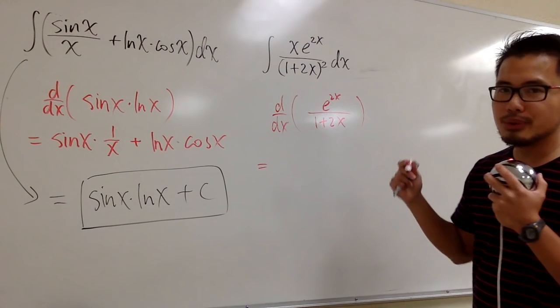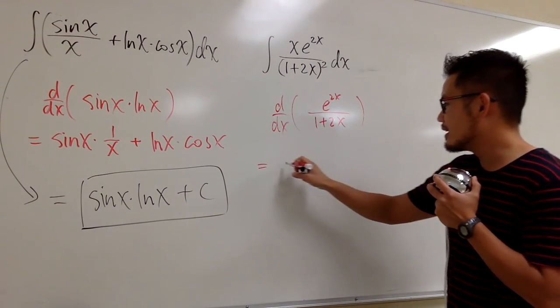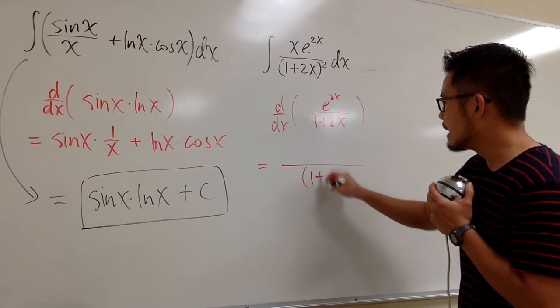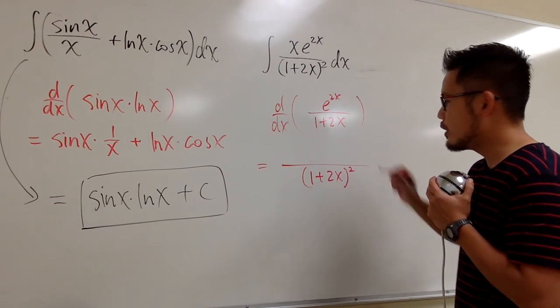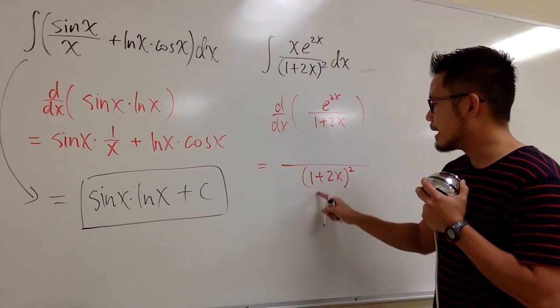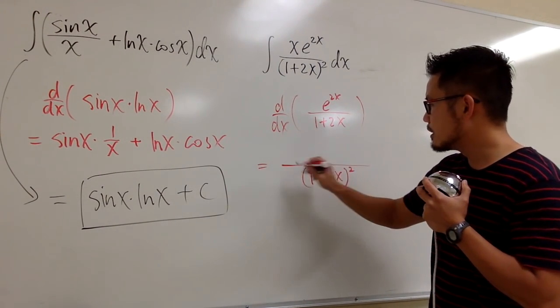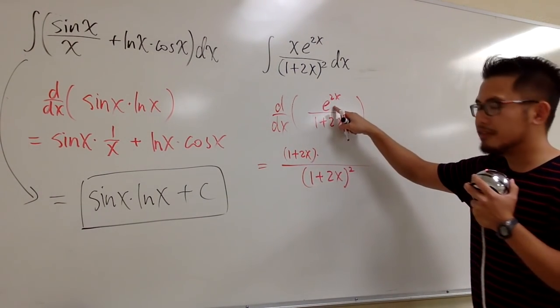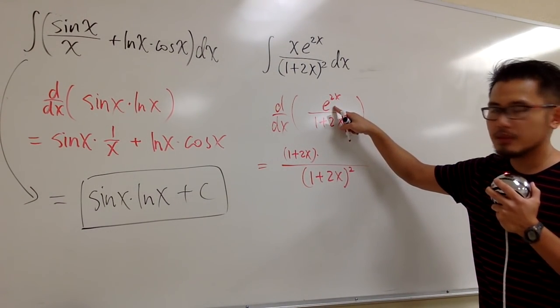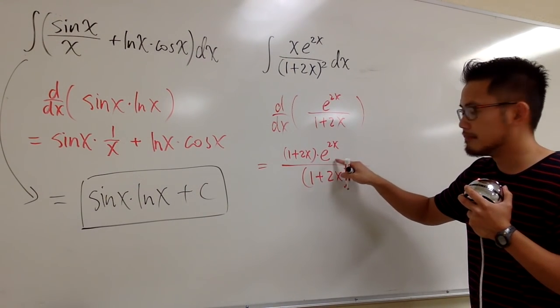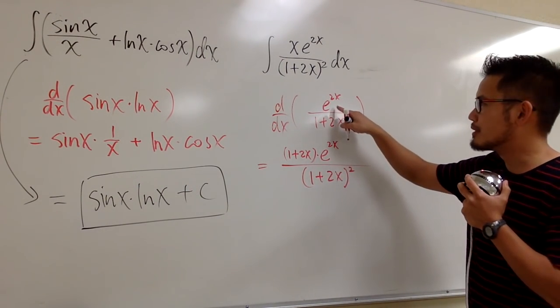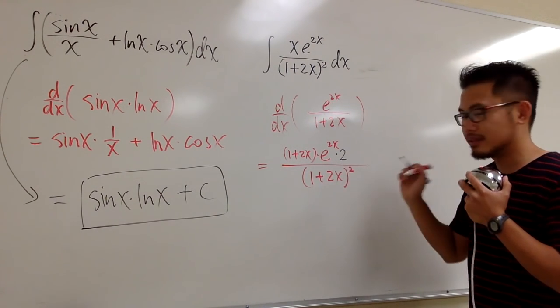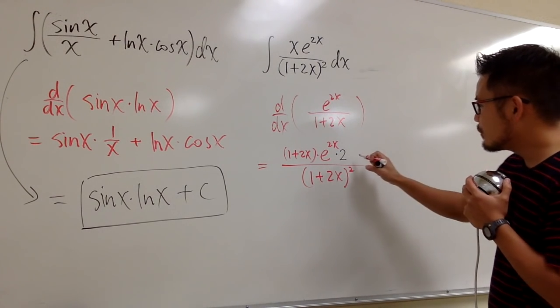So, let's see, I'm going to differentiate this function. So quotient rule says I'm going to square the denominator, so we have 1 plus 2x and then square. And then I'm going to keep the bottom function right here. So 1 plus 2x and we multiply by the derivative of the top function, which will be e to the 2x. But then we have to remember the chain rule. We have to look for the derivative of 2x, which is the 2. So let's multiply by the 2.